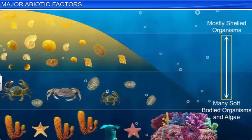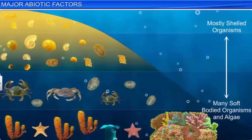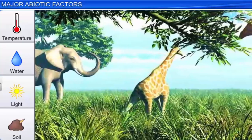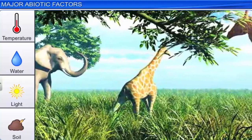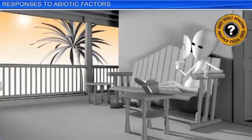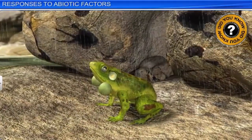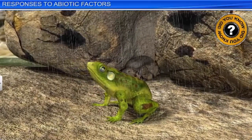Similarly, in aquatic habitats, the sediment characteristics determine the type of benthic animals that can survive there. Organisms living in this zone are called benthos, which include chitons, oysters, mussels, sponges, corals, and crabs. Various organisms adapt themselves to different abiotic factors of the environment, which include temperature, water, light, and soil. Did you know that sweating in summer, shivering in winter, and seeing frogs in the rain but not in summer or winter, are all responses to changing abiotic factors?